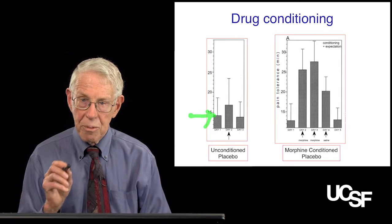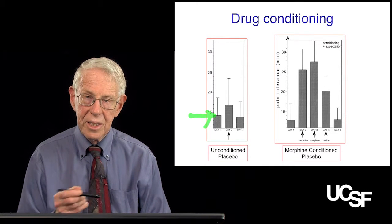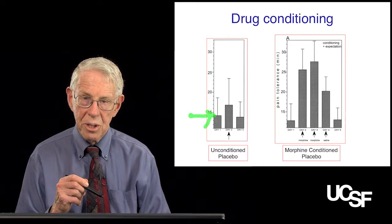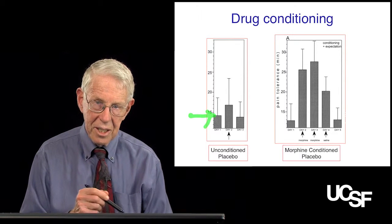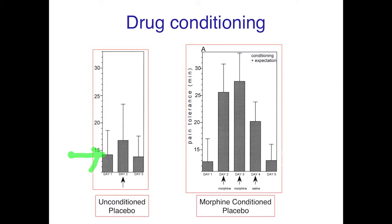The next day, subjects were brought back with the same blood pressure cuff. This time, they were told they were getting morphine through an intravenous line. There might have been a little bit of a pain-relieving effect, but not much. On day three, they were told they weren't getting any pain reliever at all, and you can see that they're back to where they were on day one.